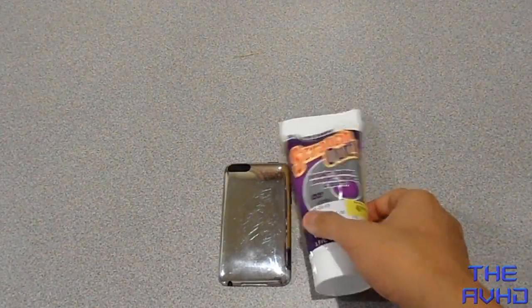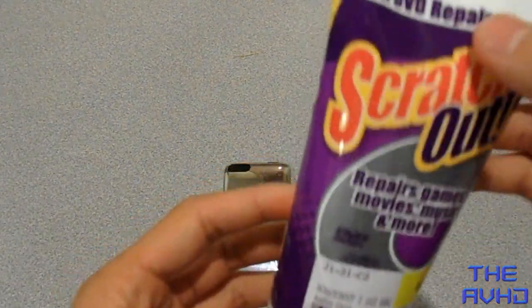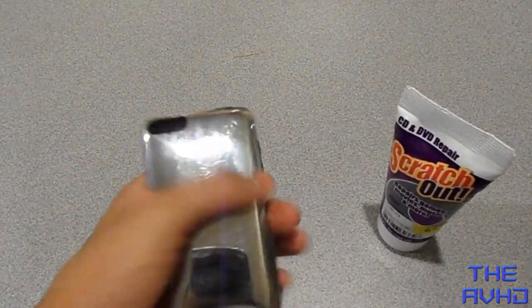Hey YouTube, this is a review of Scratch Out. You can get it for $6 or $7 at Five and Below. I'm going to be using it on the back of my iPod. You can also use it on CD disc repairs.